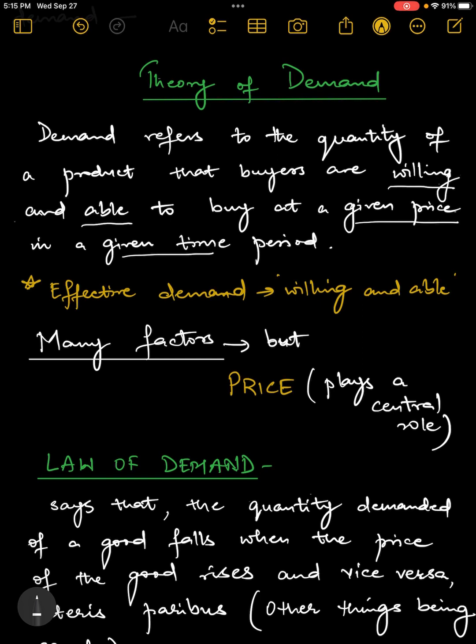There are many keywords in this definition. The word willing means that the consumer is going to the market with an intention of making the purchase, and able means that he can actually afford it. He has the purchasing power to buy that product. In order for the demand to be effective demand, these two conditions need to be met.